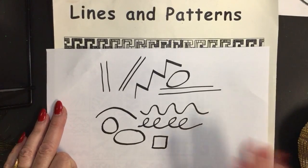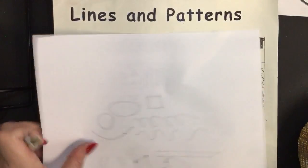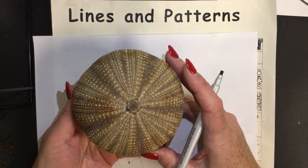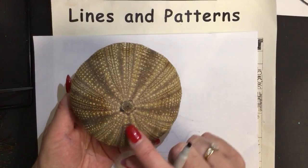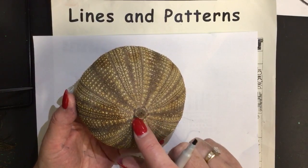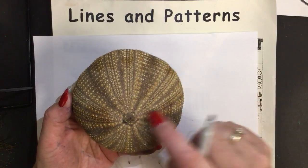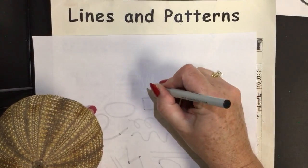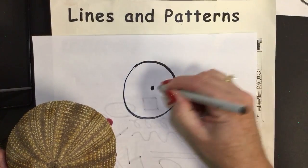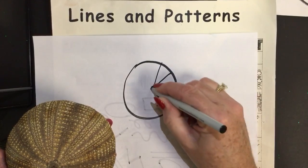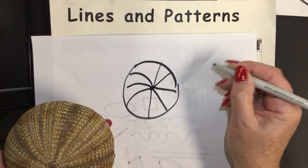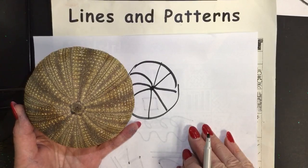Now let's look at nature. Here is a sea urchin. If we're looking at nature we're looking at the pattern and line. These lines all tend to merge together or start together at the center point and they radiate out from a center point. This is called radial line or radial design — it just repeats over and over again from a center point. Sometimes the lines can be curved repeating from a center point. This is an idea that we might want to put in our design today.